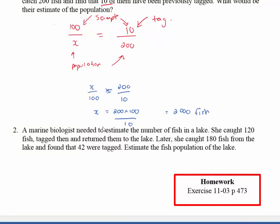A marine biologist needed to estimate the number of fish in a lake. She caught 120 fish, tagged them, and returned them to the lake. So we have 120 fish that she caught out of some population, and she returned them to the lake. Later she caught 180 fish. Now 180 is the whole population now.